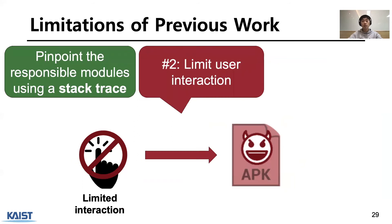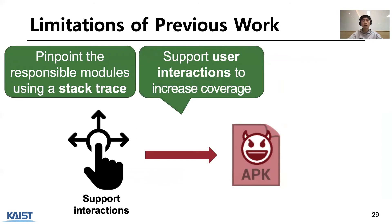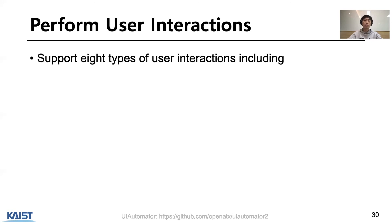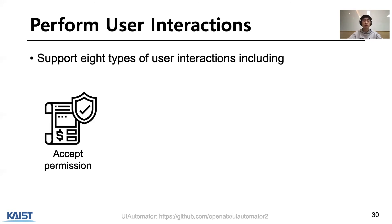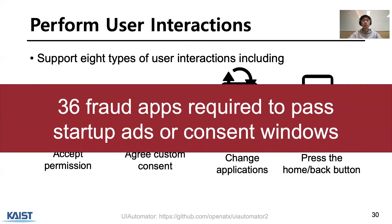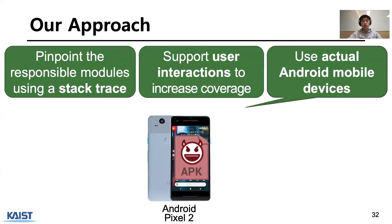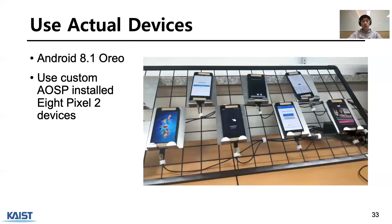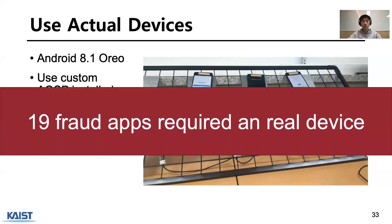The second challenge is limited user interaction. Fraudetective supports user interaction to increase app testing coverage, using UI Automator to support interactions including accepting Android permissions, accepting custom consent of apps, changing applications, and pressing home and back buttons. Of the fraud apps we found, 36 apps require these interactions to reveal fraud behaviors. The third challenge is the use of Android emulators. Fraudetective uses a real Android device — specifically an 8px2 device with custom AOSP installed — for dynamic testing. 19 fraud apps require a real Android device to run.